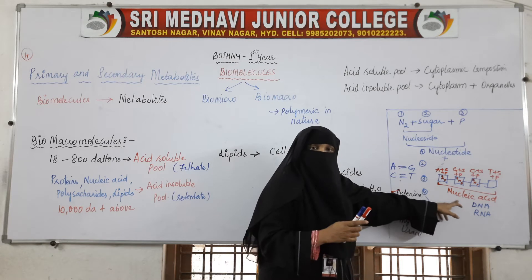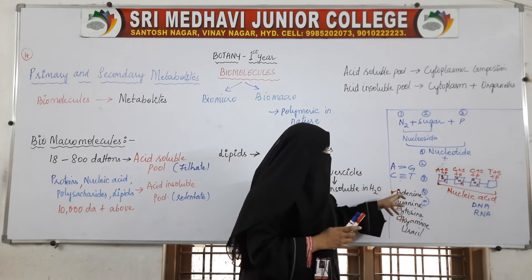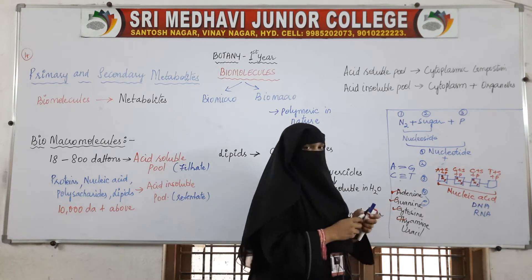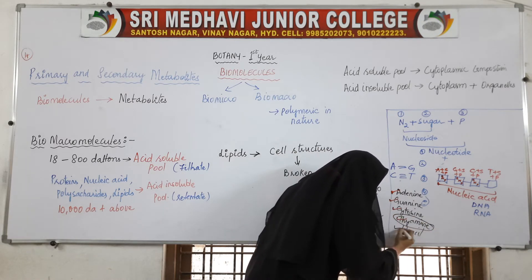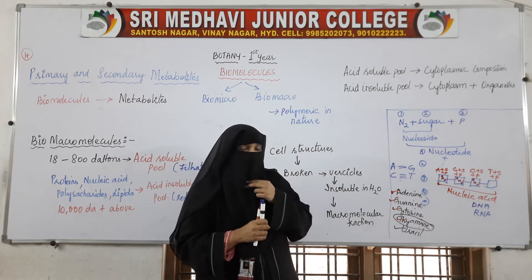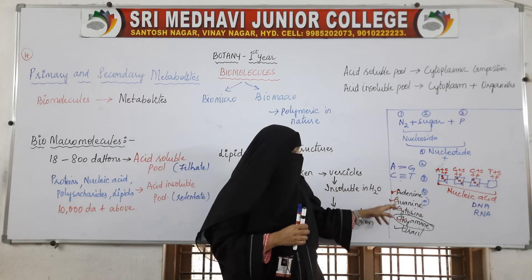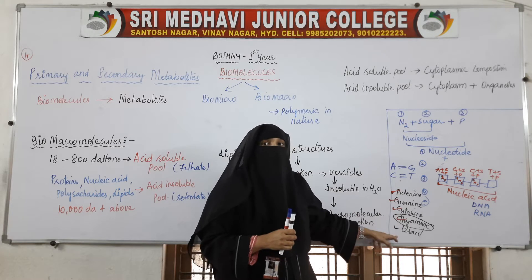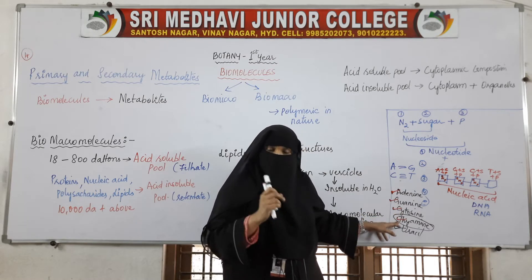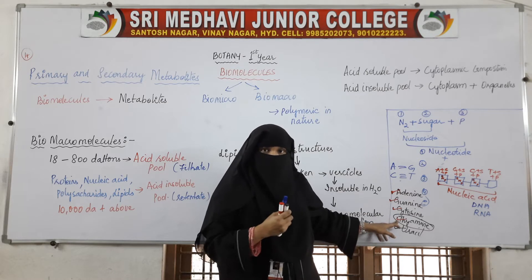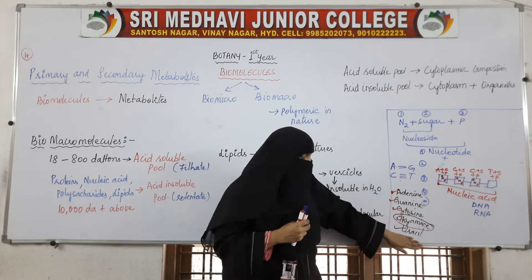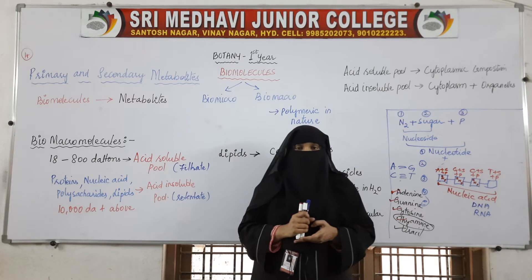DNA has adenine, guanine, cytosine, and thymine as its nitrogenous bases. But in RNA, instead of thymine, uracil is present. So RNA consists of adenine, guanine, cytosine, and uracil. If thymine is present, it is DNA; if uracil is present instead of thymine, it is RNA.